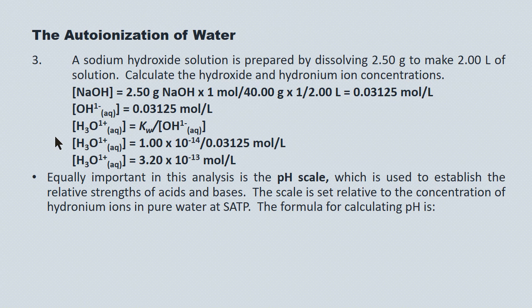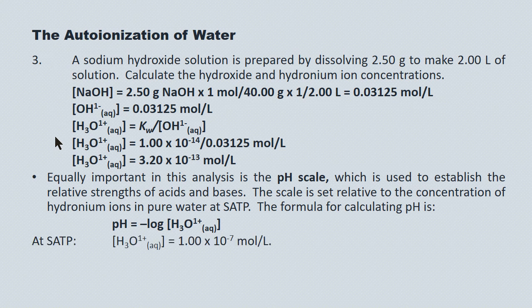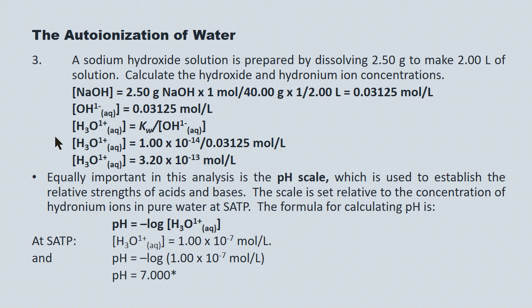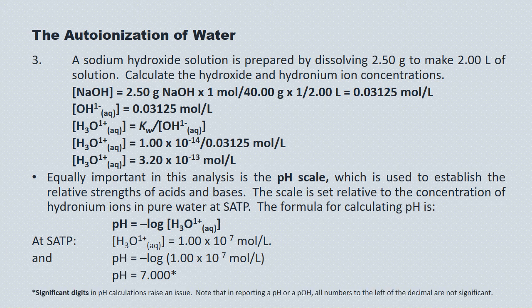Equally important is the pH scale, which we use to establish the relative strength of acids and bases. The scale is set relative to the concentration of hydronium ions in pure water at SATP. The formula is: pH is the negative log of hydronium ion concentration. We know the hydronium ion concentration in pure water at SATP is 1.00 times 10 to the minus 7 moles per liter, so we get a pH value of 7.000. The pH scale is an exponential scale, so by agreement any digit to the left of the decimal is not significant — the 7 is not significant — making this a value reported to three significant digits, just like the hydronium concentration.